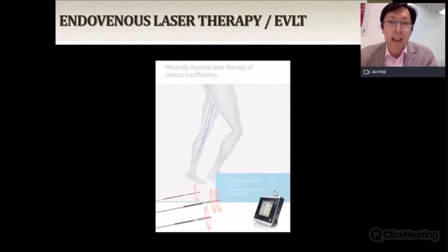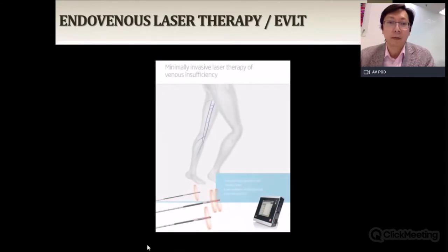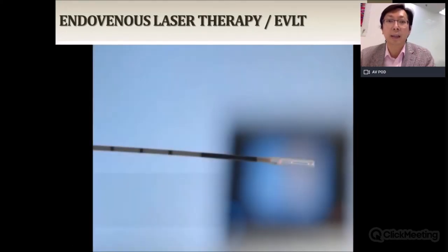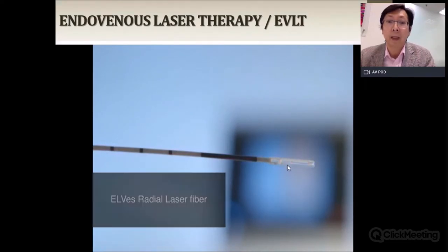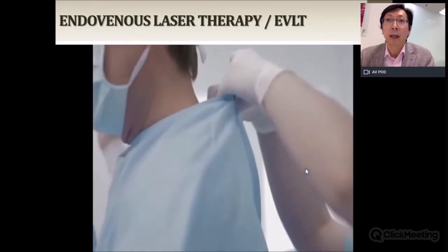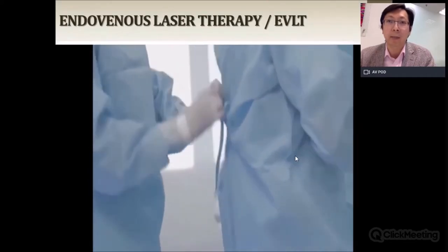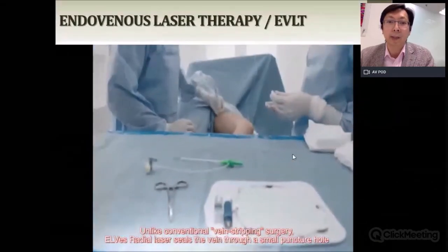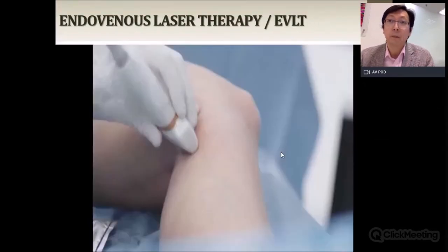To show how the laser procedure is done: this is the laser fiber, which is very thin — as thick as the tip of a ballpoint pen. There is a light at the end that emits the laser. It is done as a sterile procedure with the surgeon gowned up, and ultrasound is a very important tool for performing this procedure.